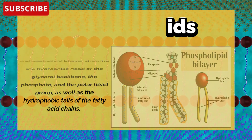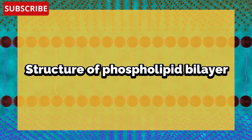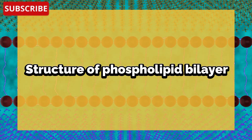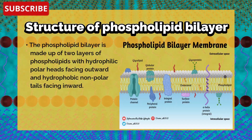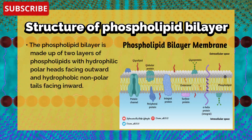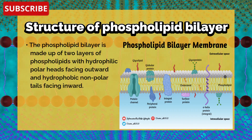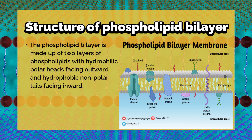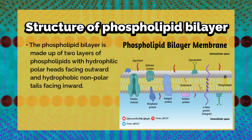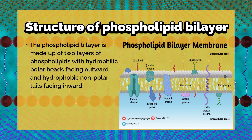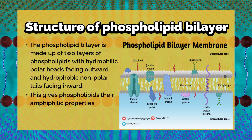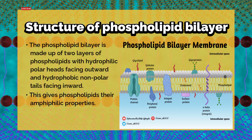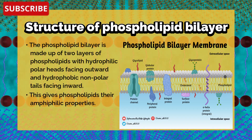The phospholipid bilayer is made up of two layers of phospholipids with hydrophilic polar heads facing outward and hydrophobic non-polar tails facing inward. This gives phospholipids their amphiphilic properties.